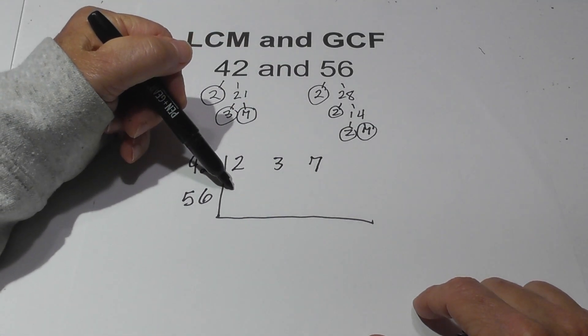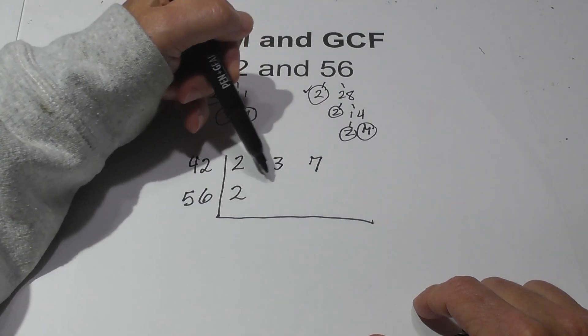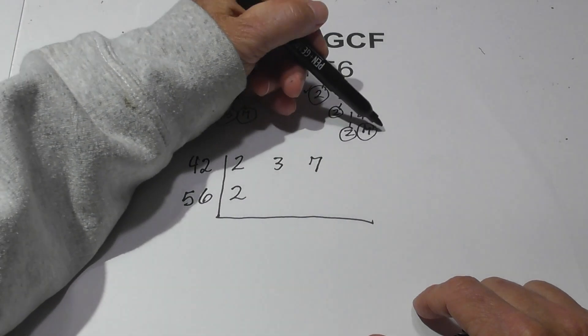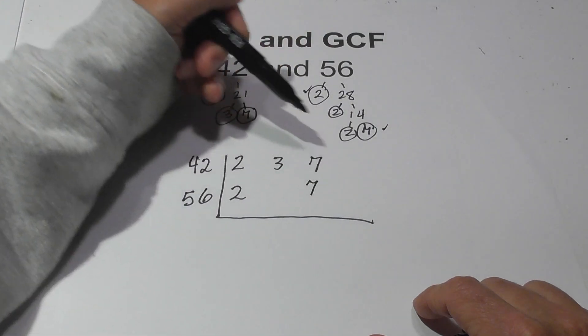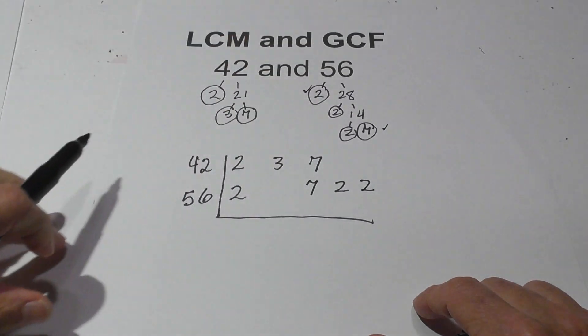Then for 56, I have a 2, I'll put a check by that, and then I'm going to skip over the 3. I do have a 7, so I'm going to write the 7 there, and then I have 2 more 2's left over. That's just so I don't make a mistake.